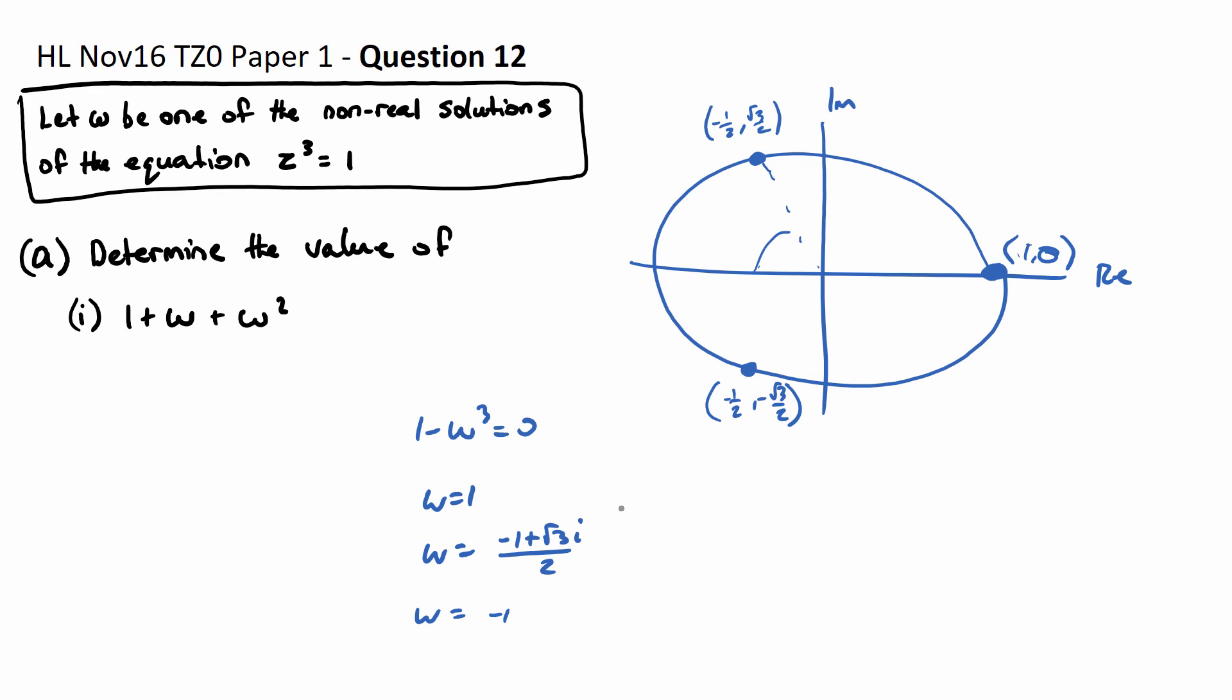And we're also going to get w equals negative 1, this one down here, negative root 3i on 2. So these are our three solutions for w.